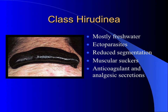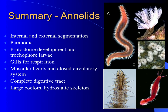Annelids are a very large group of large, active, complex organisms — far more than just worms. Key features include internal and external segmentation with some segments modified to form a head, parapodia paired appendages, protostome development with trochophore larvae and spiral cleavage, well-developed gills for respiration, muscular hearts pumping blood through a closed circulatory system, and a complete digestive tract with a large coelom serving as a hydrostatic skeleton. Annelids are another great example of Lophotrochozoa.